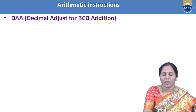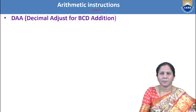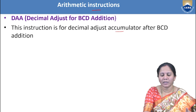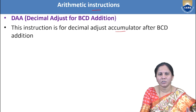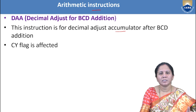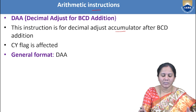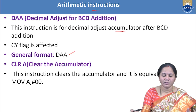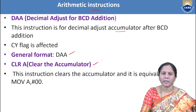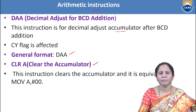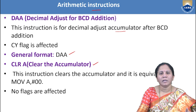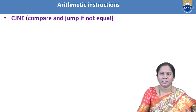DAA represents decimal adjust accumulator for BCD addition. This instruction is used for decimal adjustment after BCD addition, and when executed, the carry flag is affected. Its general format is simply DAA. Another arithmetic instruction is CLR A, which clears the accumulator, setting it to 0. No flags are affected when CLR A executes.